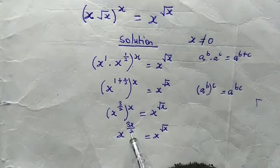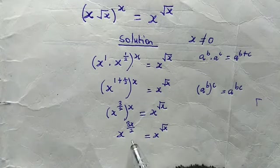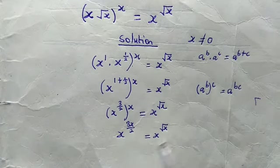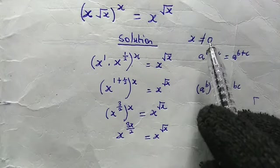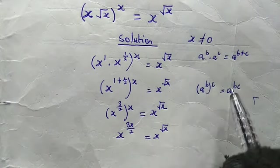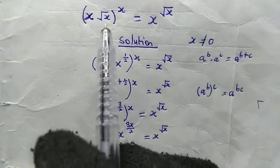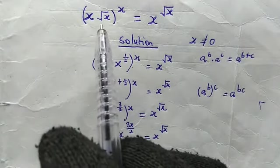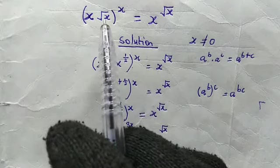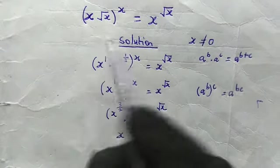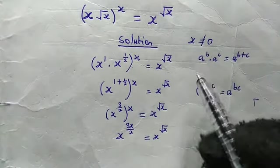Now from here, we can equate the powers since we have equal bases. But when you equate the powers, we also arrive at x equals 0 and another rational solution. Do not forget that carefully looking at this equation, 1 is a trivial solution — because 1 times root 1 is 1, raised to the power of 1 gives 1, and 1 to the power of root 1 is also 1. So 1 is a solution.